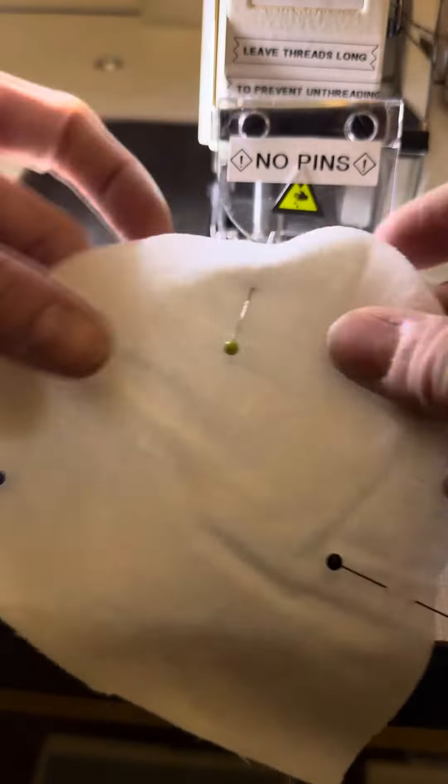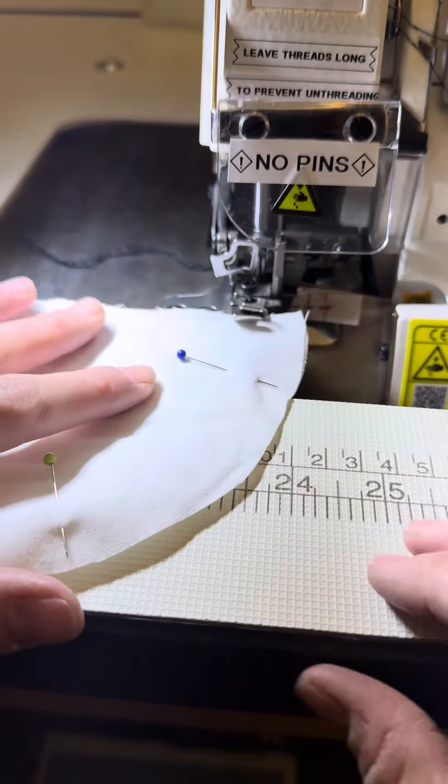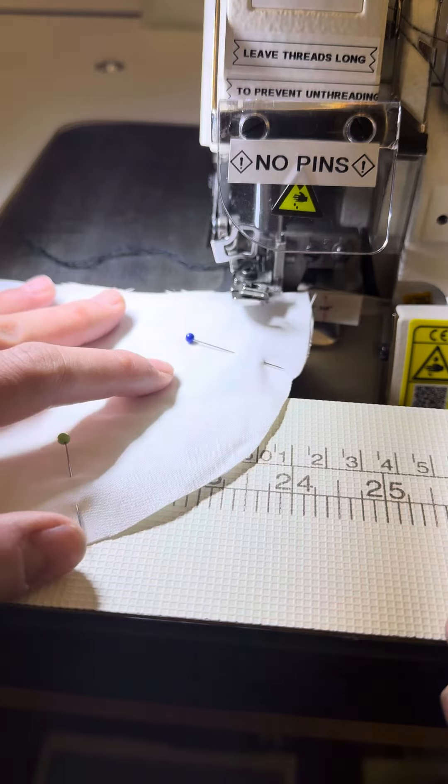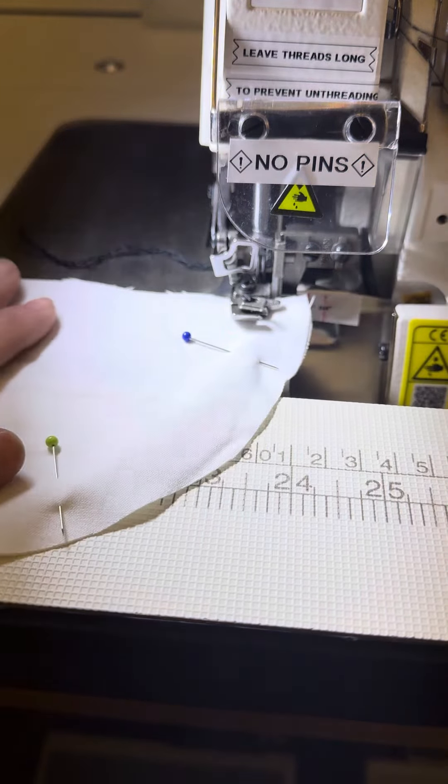I'm going to line up the edge of the fabric with the half-inch mark on my serger. I'm going to pick up my presser foot and push it in until it's lined up with that one-half inch.